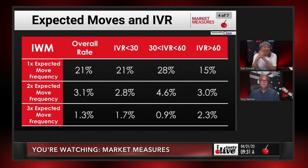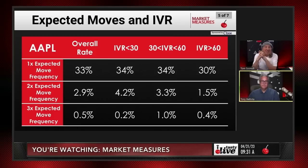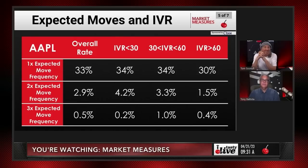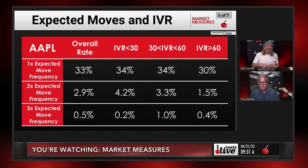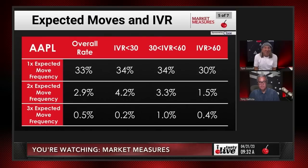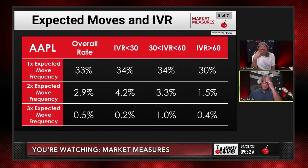Apple doesn't have that same outlier risk because it's a big-cap stock, but it breaks the one-time expected move more often than you would think. In the indexes it's the outlier risk at three times; in equities like Apple, it's more of the one-time expected move risk — which is kind of surprising.